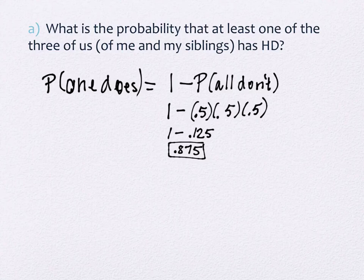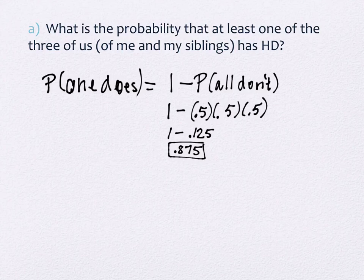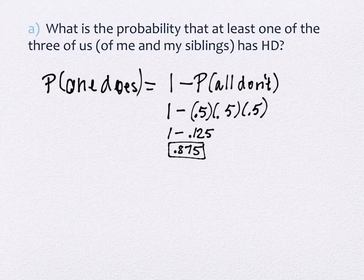My brother and sister are getting close to old enough that they could be showing symptoms in the next few years. There's an interesting statistical element here: the age of onset for this disease has a mean of the same age your parent had it. My dad's onset was probably around 45 to 50. But it has a standard deviation of 18 years — and we'll talk more about means and standard deviations in chapter 10. So plus or minus 18 years is a pretty big range.